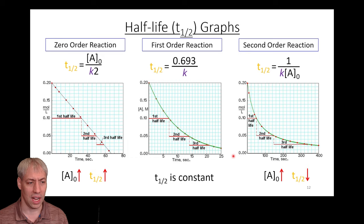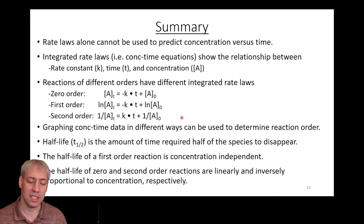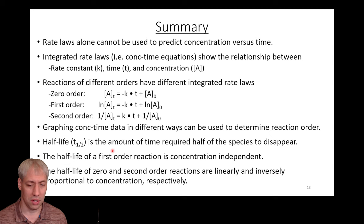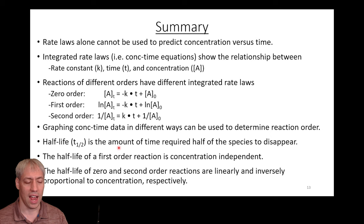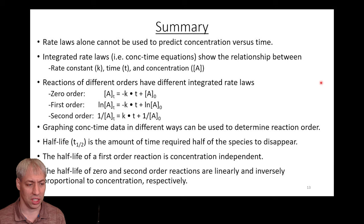So there's the summary. Rate laws give us a lot of information, but integrated rate laws also give us the relationship between time and concentration — if you know three of the four variables, you can calculate the fourth. We only need one measurement and can graph it several ways to figure out the rate law and order. The half-life is a convenient numerical definition: you could define three-quarter life or 80% life, but the convention in medicine and radioactivity is half-life. Half-life of a first order reaction is concentration independent; for zero and second order, it changes depending on the concentration of starting material. That closes out integrated rate laws — next we'll dive into collision theory, reaction mechanisms, and catalysis.